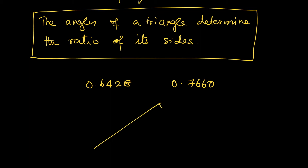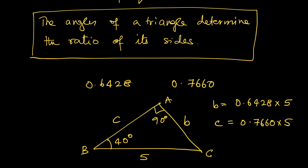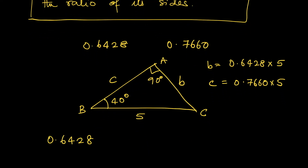So if I have a right-angled triangle where one angle is 90 degrees and another is 40 degrees, and if the hypotenuse is 5 units — labeling the vertices A, B, C — then side b is going to be 0.6428 times the length of the hypotenuse, and side c is going to be 0.7660 times the hypotenuse.